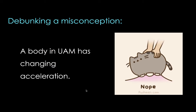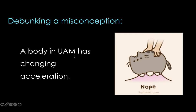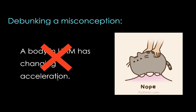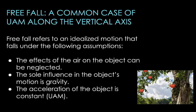The second misconception is that a body in UAM has changing acceleration. That's another wrong concept. The acceleration does not change — just take it from the term itself: uniformly accelerated motion, meaning the acceleration is uniform. The changing quantity is the velocity. But because the change in velocity is constant, the acceleration is said to be uniform. The acceleration of a body in UAM is uniform because the velocity is changing, but the change in velocity happens at a constant rate.